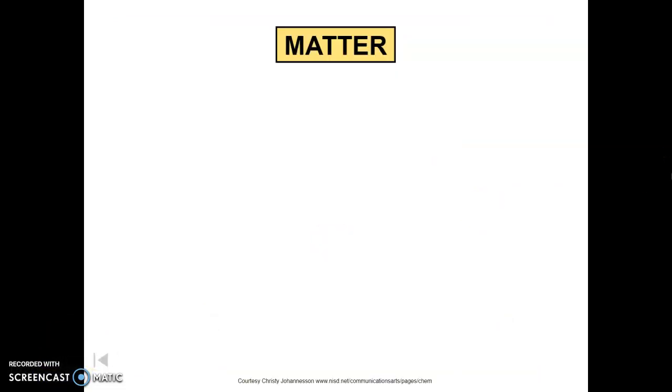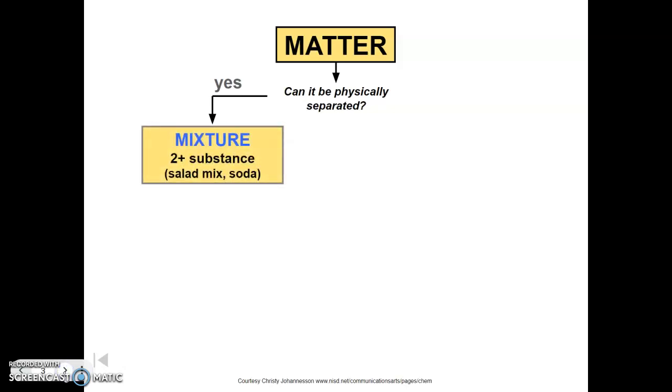So to help us classify matter today, we're going to use this really helpful flow chart that's going to help us ask a few questions and then categorize the different types of matter. So the first question we're going to ask ourselves when we're looking at something is, can it be physically separated? So if you're looking at a substance, if it can be separated, that's going to help us move on to our first classification. So if the answer is yes, it can be separated out, so it has multiple components, that's a mixture. So a mixture is two plus substances that are mixed together. So examples of this would be like a salad or a soda. Now soda is a mixture because you just think of the ingredient list. So like soda has like food coloring, sugar, natural flavor, artificial flavor, all those things are separate ingredients, so it's a mixture.